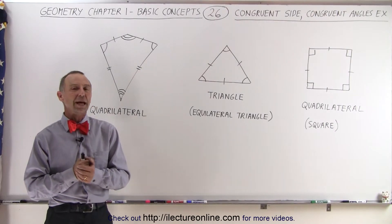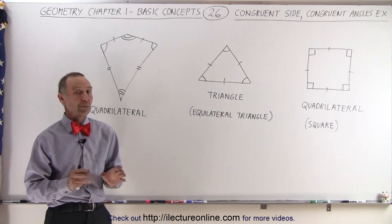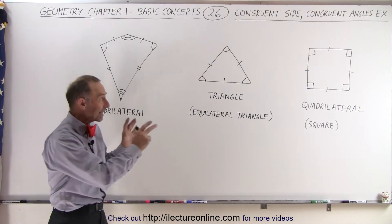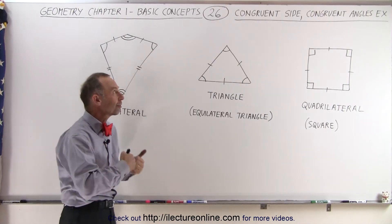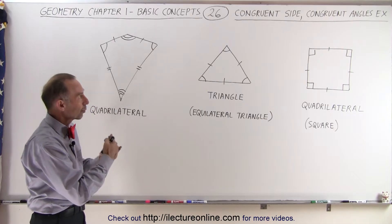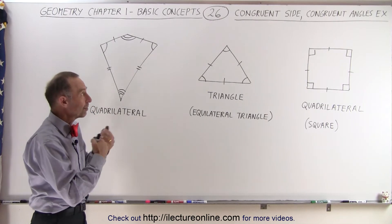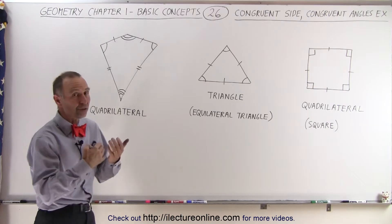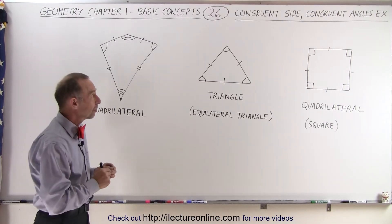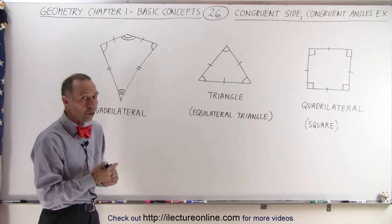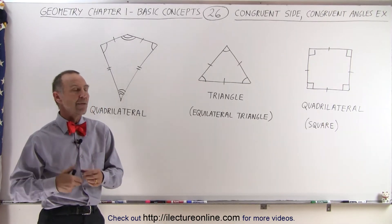Welcome to ElectronLine. We're going to begin looking at figures, but before we do, we're going to take these three here and use them as an exercise to figure out which are congruent sides and which are congruent angles. The definition of congruent sides are sides of a figure that have the same length, and congruent angles are angles in the figure that have the same measure.